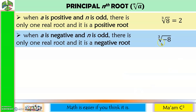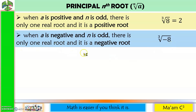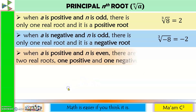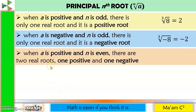Example: cube root of negative 8. Our n is an odd number, but this time our radicand is a negative number. If this is the case, we still have one real root, but this time it is a negative root. The answer to cube root of negative 8 is negative 2. Next case, when a is positive and n is even, there are two real roots, one positive and one negative.